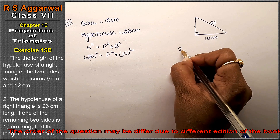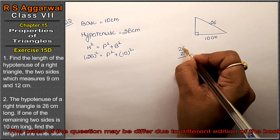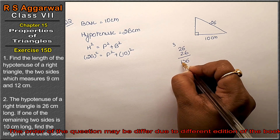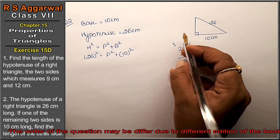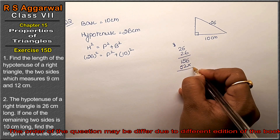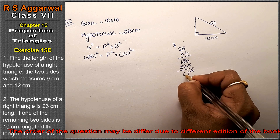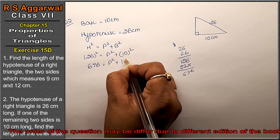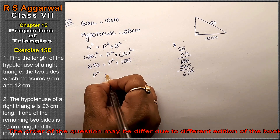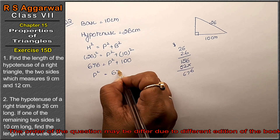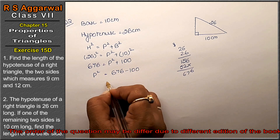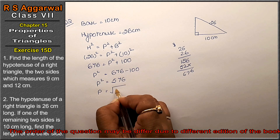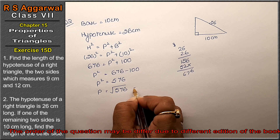We have H as 26 cm and base as 10 cm. So 26 squared equals P squared plus 10 squared. Calculating 26 times 26 gives 676. So P squared equals 676 minus 100, which is 576. Now we find the square root of 576.